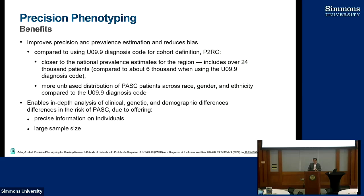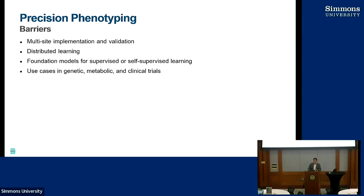Another benefit is that it enables in-depth analysis of clinical, genetic, and demographic differences in risk of PASC, because it offers very precise definitions and very precise information on every individual, and it offers a large sample. We have a cohort of about 85,000 patients, about 25,000 of whom have been labeled. We can now answer a whole bunch of different questions that curating just a broadly defined cohort cannot get to.